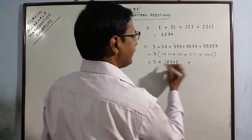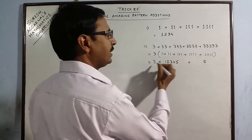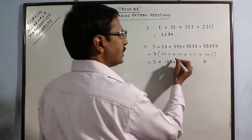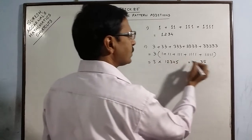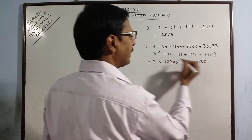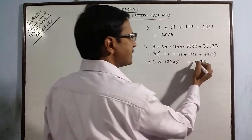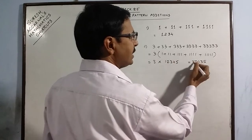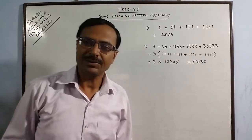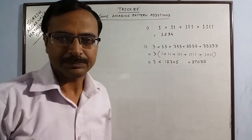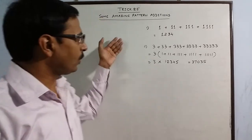Calculating: 3×5=15, write 5 carry 1; 3×4=12+1=13, write 3 carry 1; 3×3=9+1=10, write 0 carry 1; 3×2=6+1=7; 3×1=3. So 37035 is your required answer. You do not need to write all these numbers in a sequence and perform the addition.